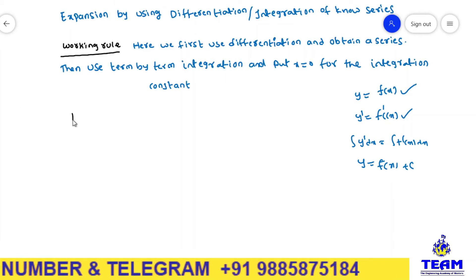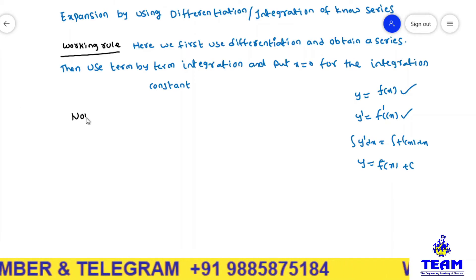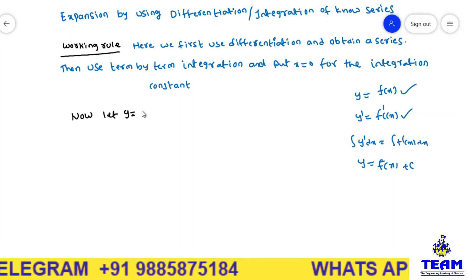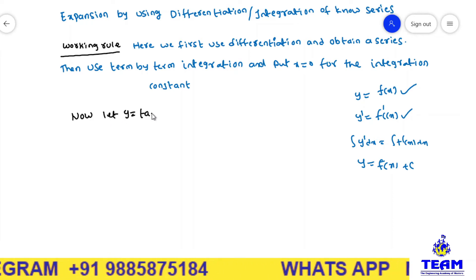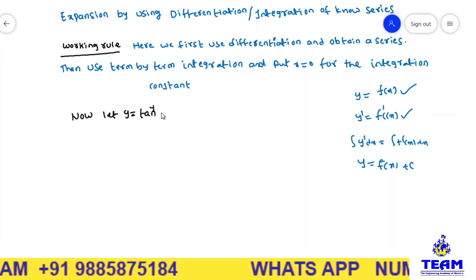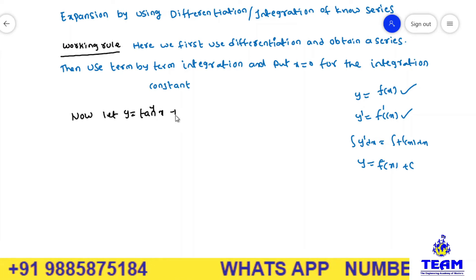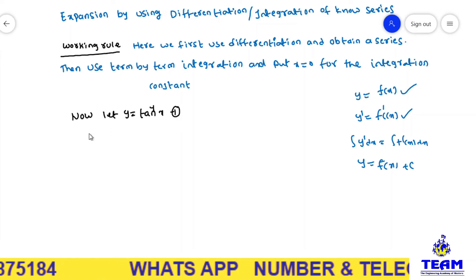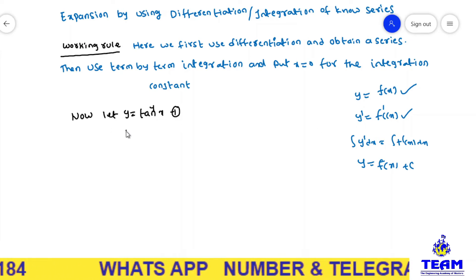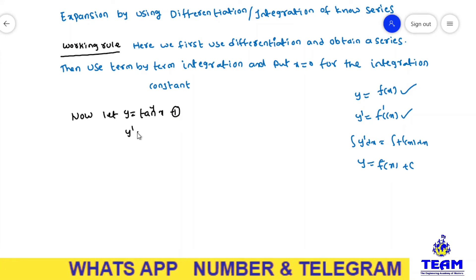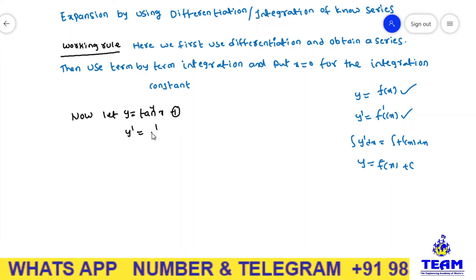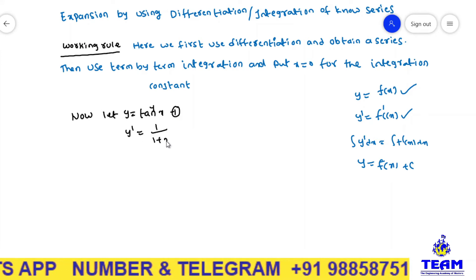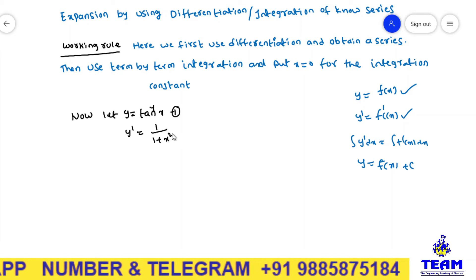Now, let y equal to tan inverse x — consider this as equation number 1. Differentiate equation 1 with respect to x. Then, y dash is equal to the derivative of tan inverse x, which is 1 by 1 plus x squared.